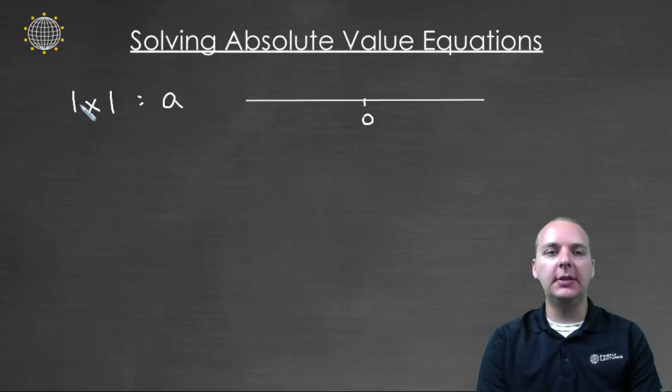We'll start with a simple example. Instead of just x equals a, what if we had the absolute value of x equals a? In other words, we're trying to find the value of x so that if you took the absolute value of it, it would give us a.